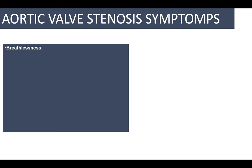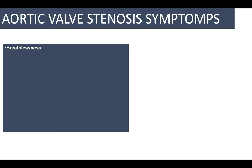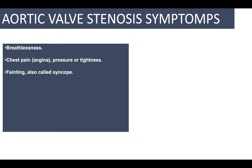Signs and symptoms of aortic valve stenosis include breathlessness, because oxygenated blood returning from the lungs cannot get through the stenotic valve efficiently, reducing cardiac output. Patients may also complain of chest pain and pressure or tightness due to the cardiac muscle working much harder — this can be confused with angina or ischemic heart disease. Fainting and syncope can also occur.